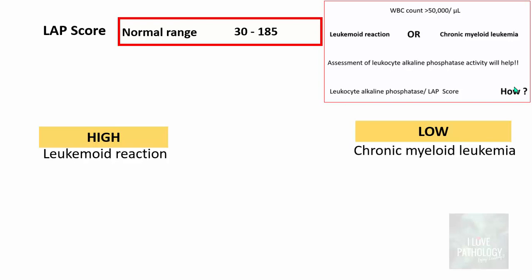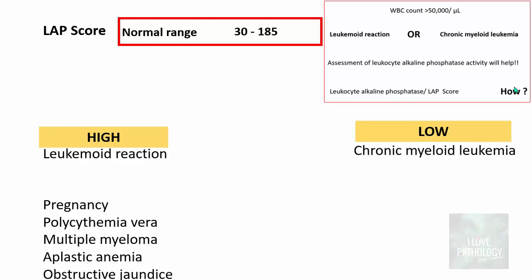A high LAP score is not characteristic of leukemoid reaction alone. It can also be seen in pregnancies, polycythemia vera, cases of multiple myeloma, aplastic anemia, and obstructive jaundice. Similarly, CML is not the only entity showing a low LAP score — it can be low in paroxysmal nocturnal hemoglobinuria, sickle cell anemia, and cases of hypophosphatemia.